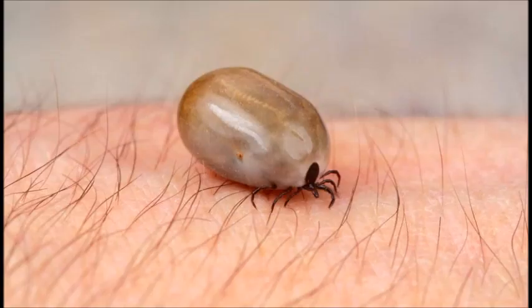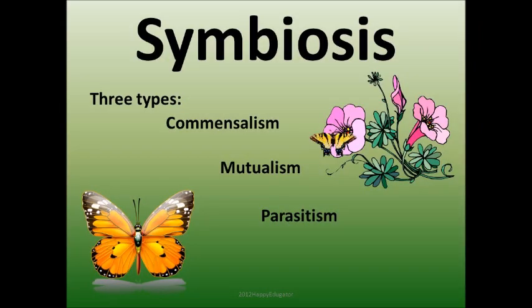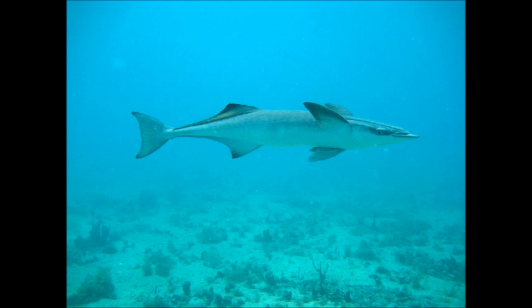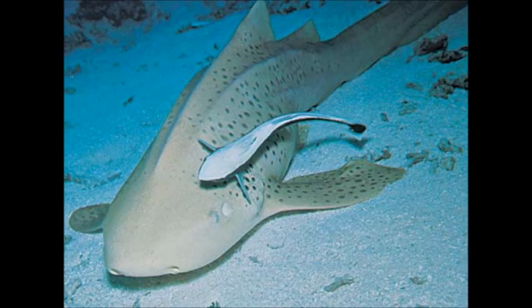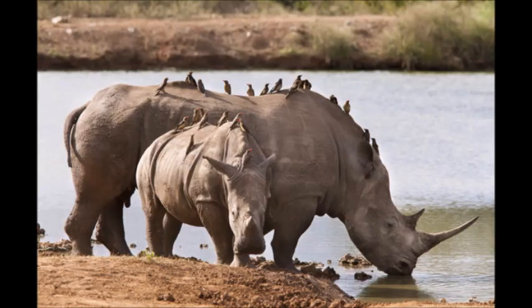Parasitism is one form of symbiosis, but others include commensalism and mutualism. Parasitism is when one organism harms another. Commensalism is where one organism benefits without harming another — one example is the remora that lives on sharks, adhering to the side of a shark to catch its excess food. Mutualism is when both organisms benefit, such as a clownfish and sea anemone, or a rhinoceros and an oxpecker.